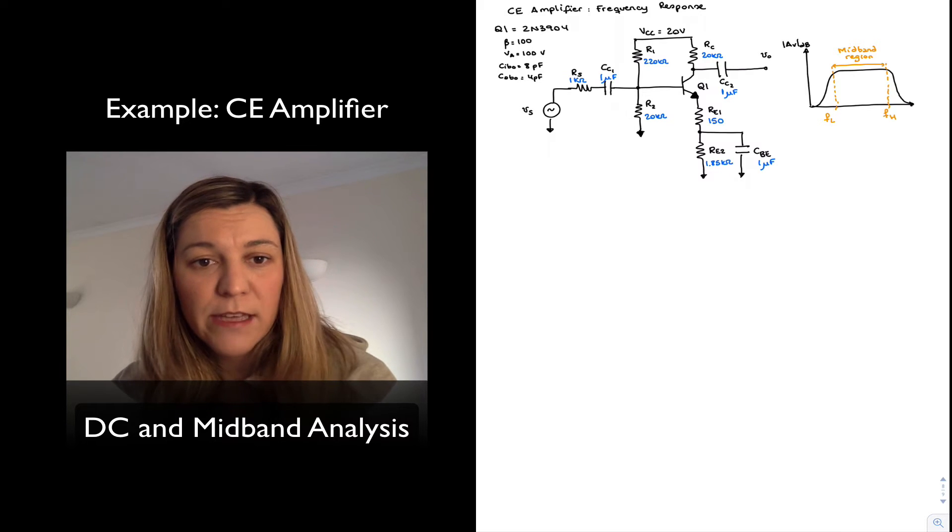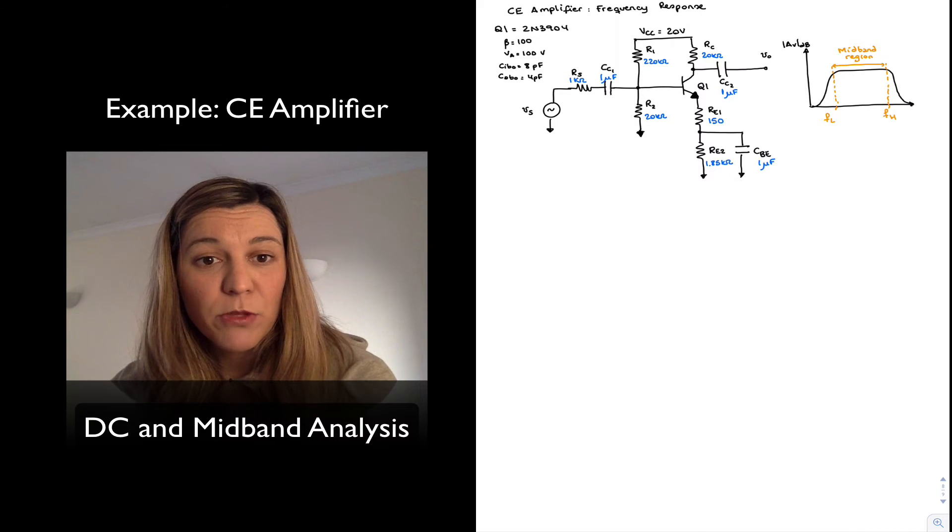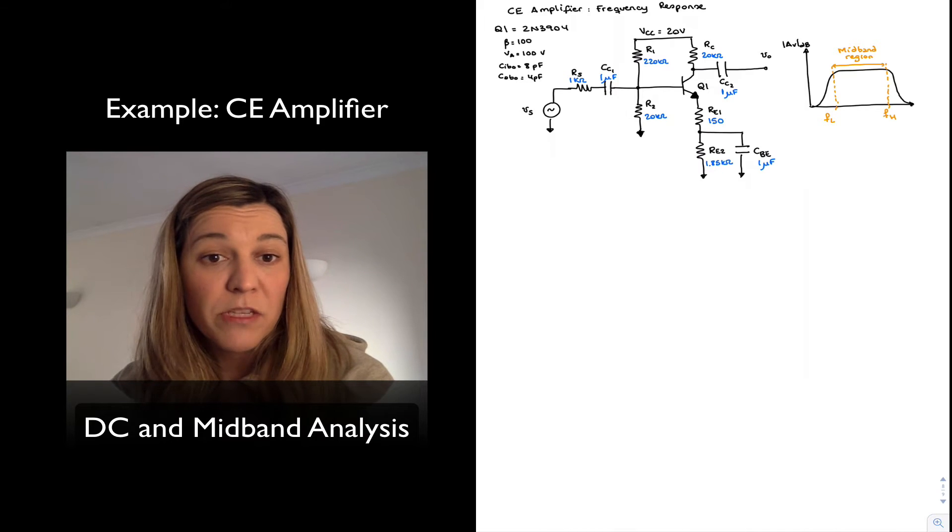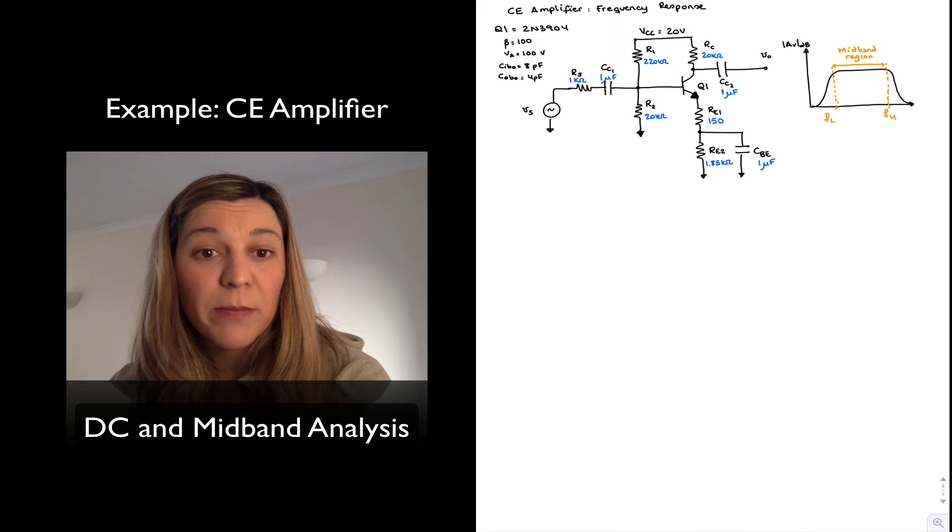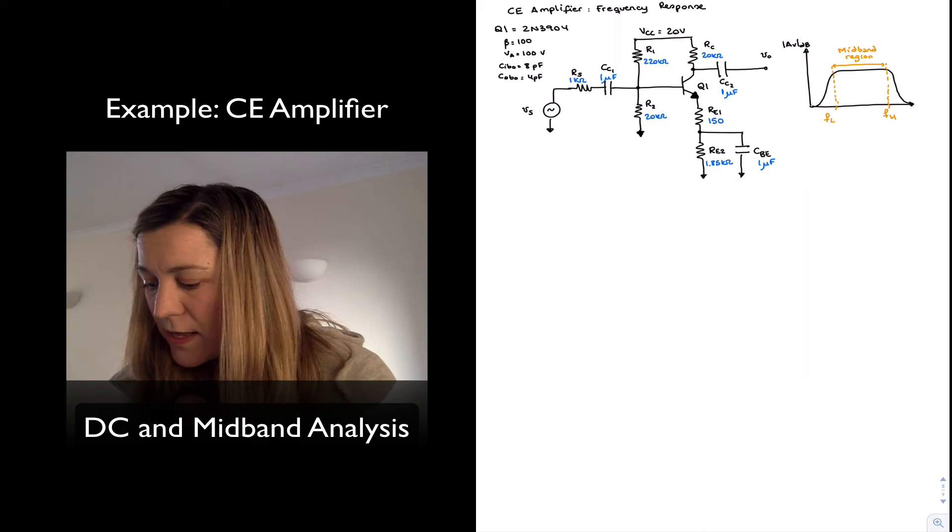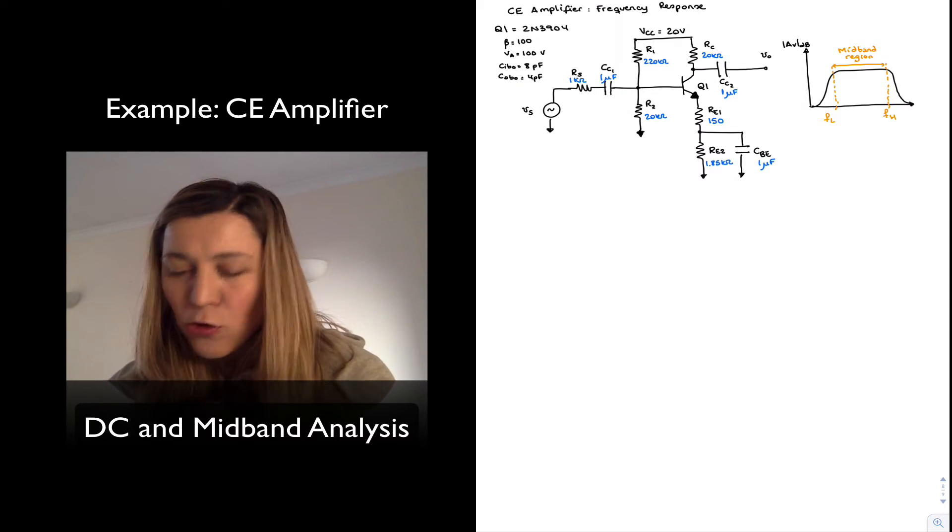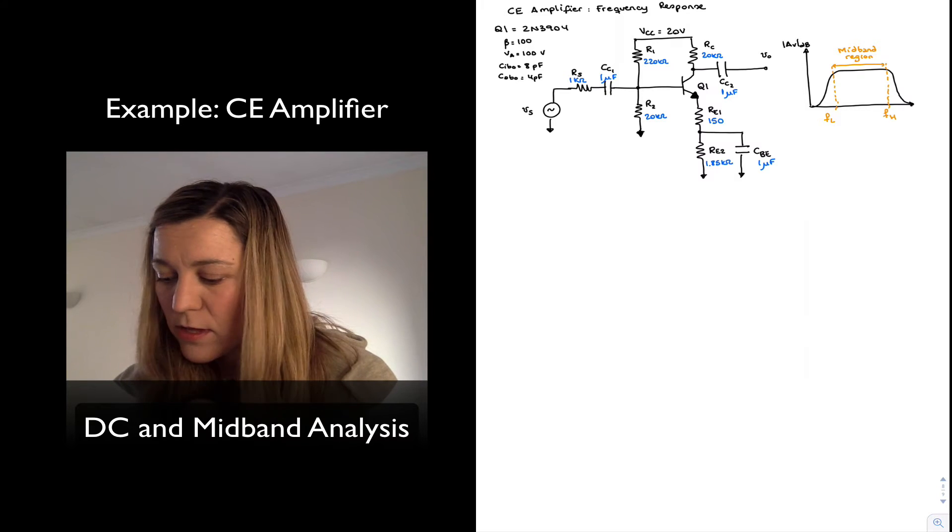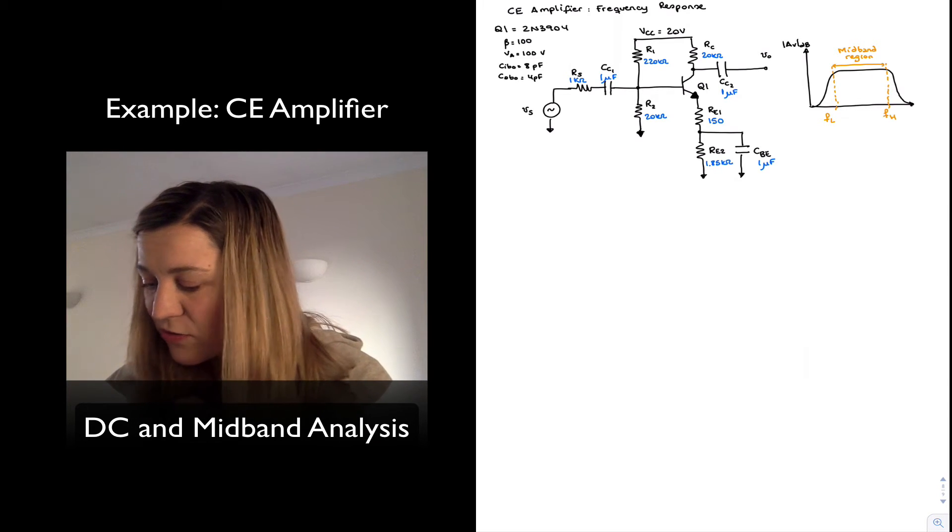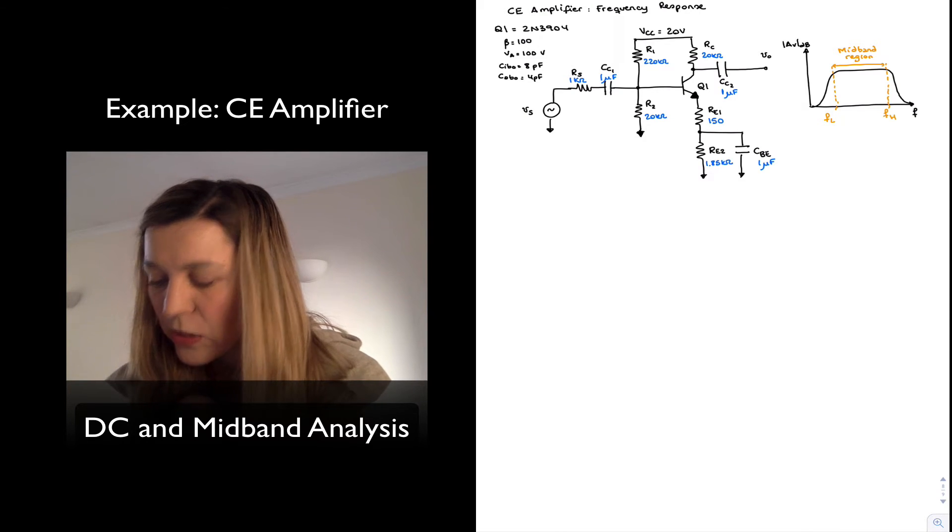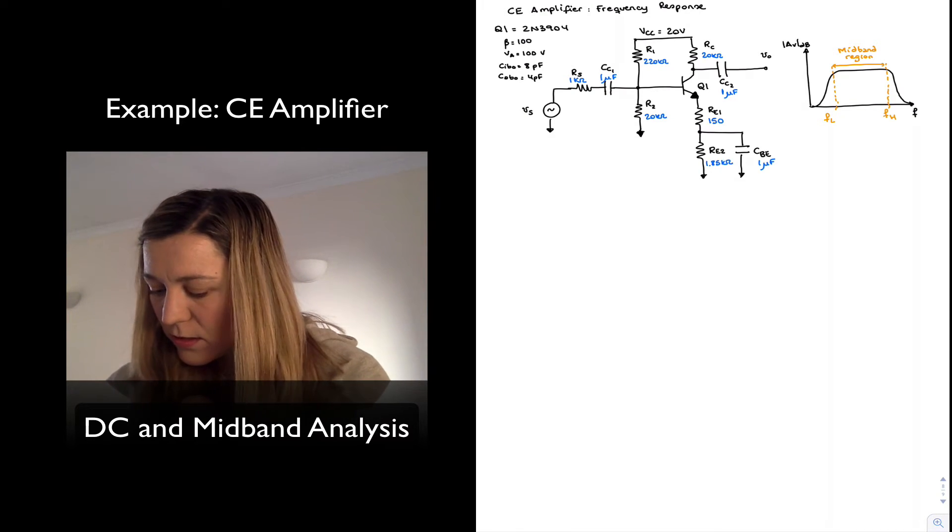The region in between those cutoff frequencies determines the bandwidth of the amplifier and it's termed the mid-band region. And normally since this is a Bode plot, the magnitude of the gain is going to be expressed in dBs and that's going to be plotted versus frequency in Hertz. Alright, so let's get started.